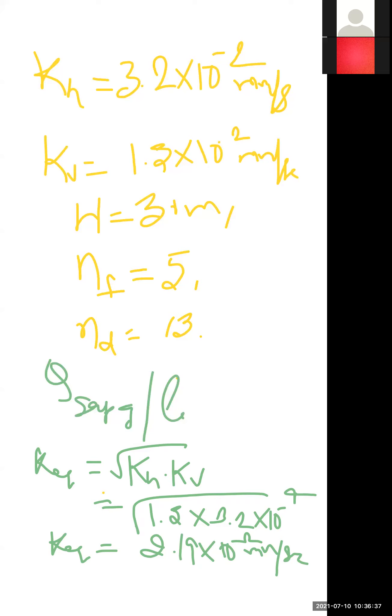Next step is to calculate discharge of seepage loss. For discharge of seepage loss, we can use the formula Q equals K_equivalent times H times NF by ND.